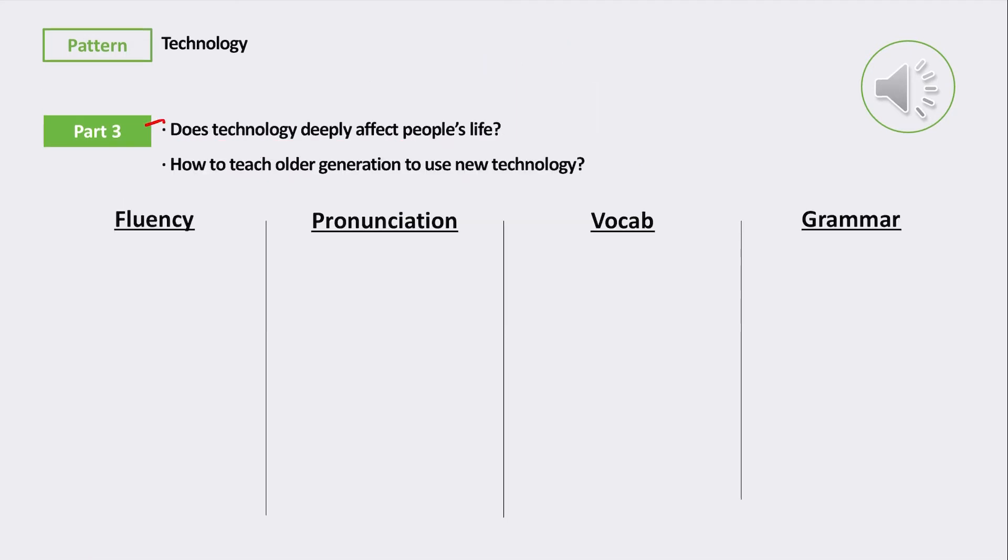Let's go and look at that Part 3 answer. Does technology deeply affect people's lives? That's quite a deep question. And then, how should we teach old people to use new technology? Makes me think about my grandma. I mean, if my grandma, who's like over 90, can learn to use Facebook, then I think most people can.